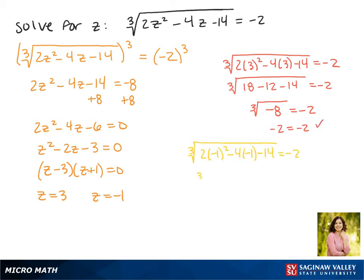Now we're going to plug back in negative 1. This gives us the cube root of 2 plus 4 minus 14 equals negative 2. This gives us the cube root of negative 8 equals negative 2, and this is true as well. Negative 2 equals negative 2, so both 3 and negative 1 are solutions to our equation.